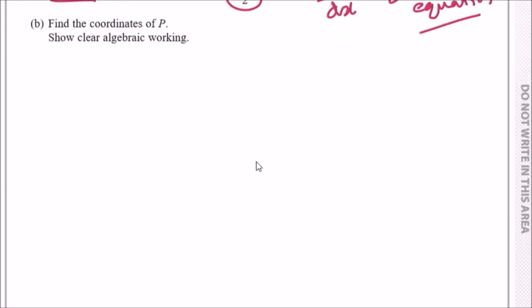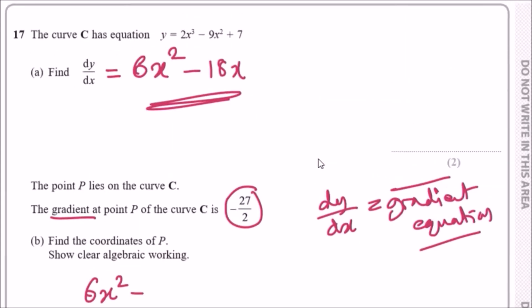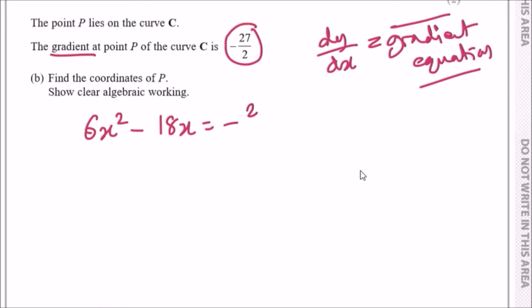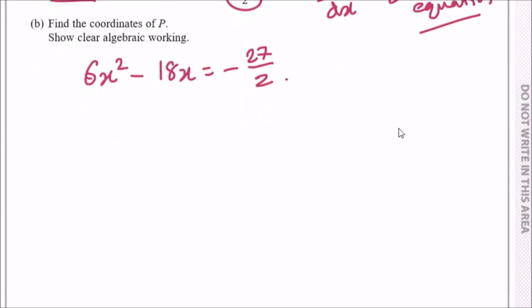Now we just have to go ahead and solve. First thing I'll do for these problems is just multiply by 2 to clear the fraction, so we're going to have 12x² - 36x, and then stop and add 27 across, so plus 27.